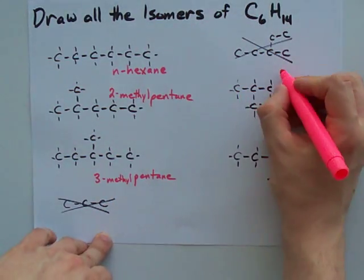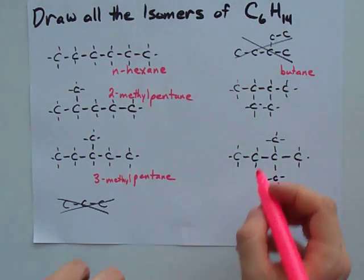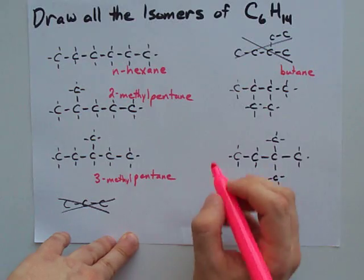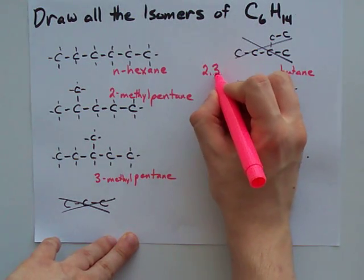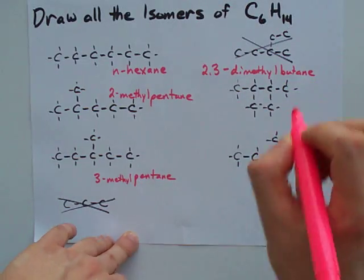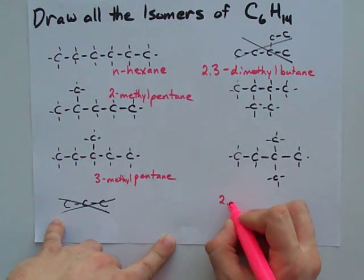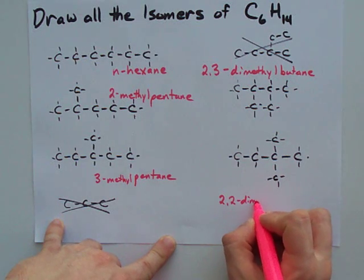This, the longest chain I can find, is a butane. It's 4 long. And I have methyls sticking out of the 2nd and 3rd carbons, which makes it a 2,3-dimethylbutane. All one word. And this one, similarly, is a 2,2-dimethylbutane.